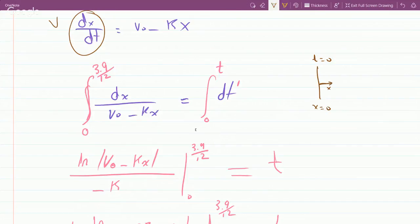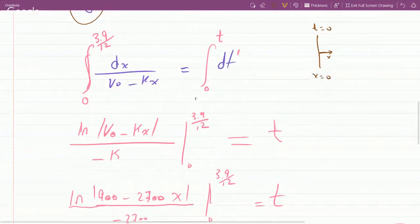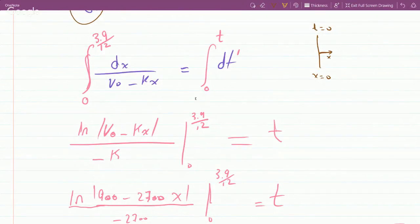I've introduced a dummy variable of integration t prime so that it's different from one of the bounds of integration. If I integrate the left side of this equation, well, there's an x in the denominator so that's just ln the denominator, divided by the chain rule which is the derivative of v₀ minus kx with respect to x, which is just minus k.